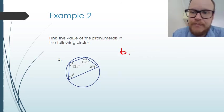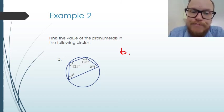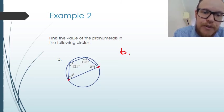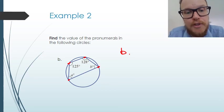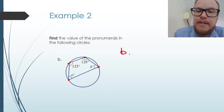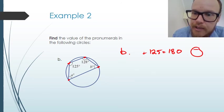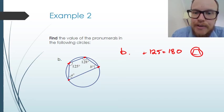For example two, part B, we have a cyclic quadrilateral — all of the vertices of the quadrilateral are on the edges of the circle, so opposite angles add to 180 degrees. So A plus 125 equals 180 because of the cyclic quadrilateral, and A is going to be equal to 55.